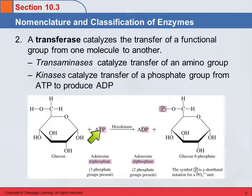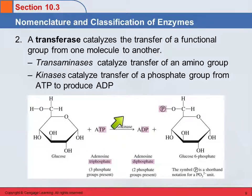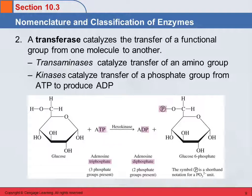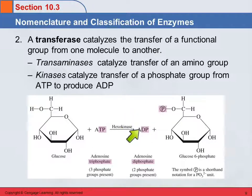The 'T' in ATP stands for triphosphate and the 'D' in ADP stands for diphosphate. The enzyme hexokinase transfers phosphate groups to hexoses — it catalyzes the transfer of a phosphate group from ATP to glucose. After the reaction, the phosphate group is now on the glucose and the ATP has become ADP, adenosine diphosphate.